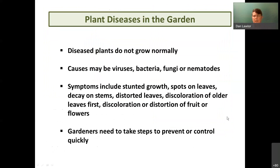Plant diseases are caused by various organisms — viruses, bacteria, fungi, or nematodes — and cause symptoms including stunted growth, leaf spots, stem decay, distorted or discolored leaves, and distorted fruit and flowers. Keeping track of disease occurrences helps prevent or control them. Scout carefully to make sure you're dealing with a disease rather than insect damage.